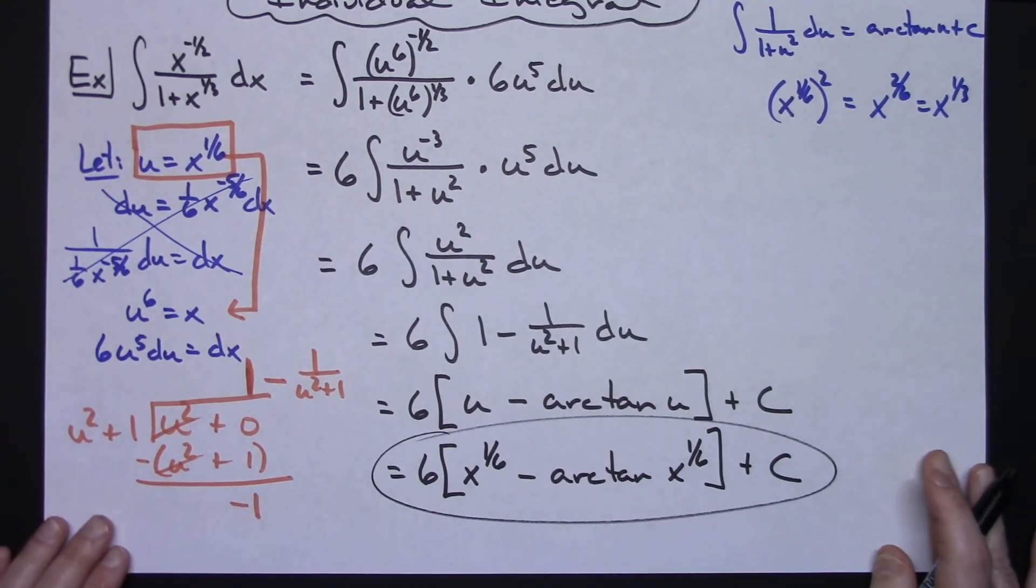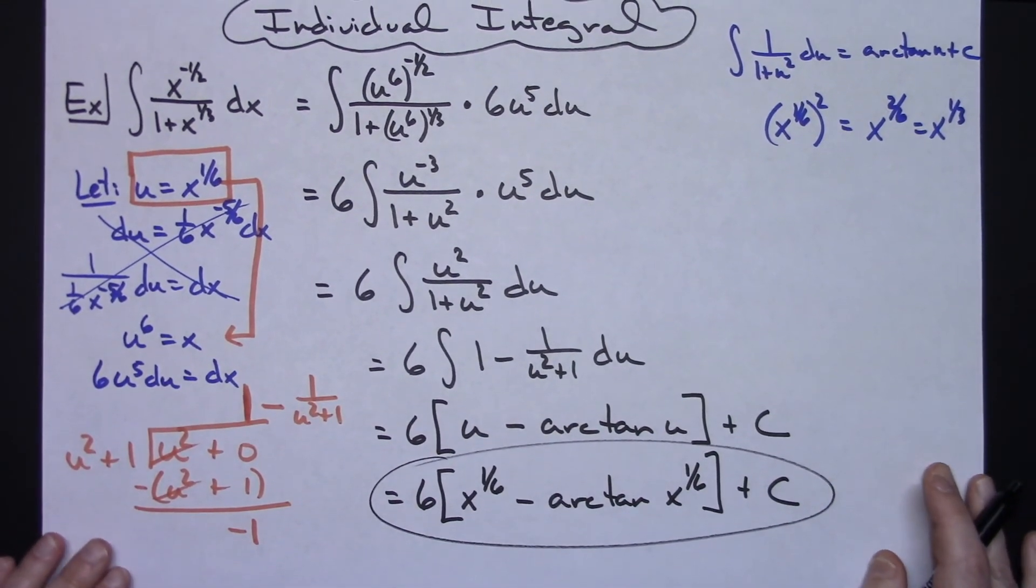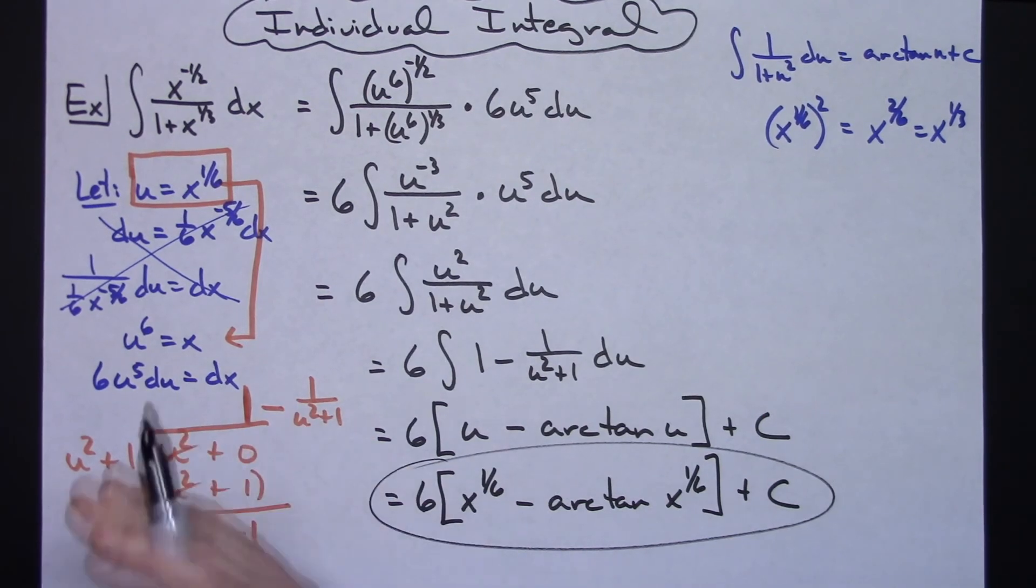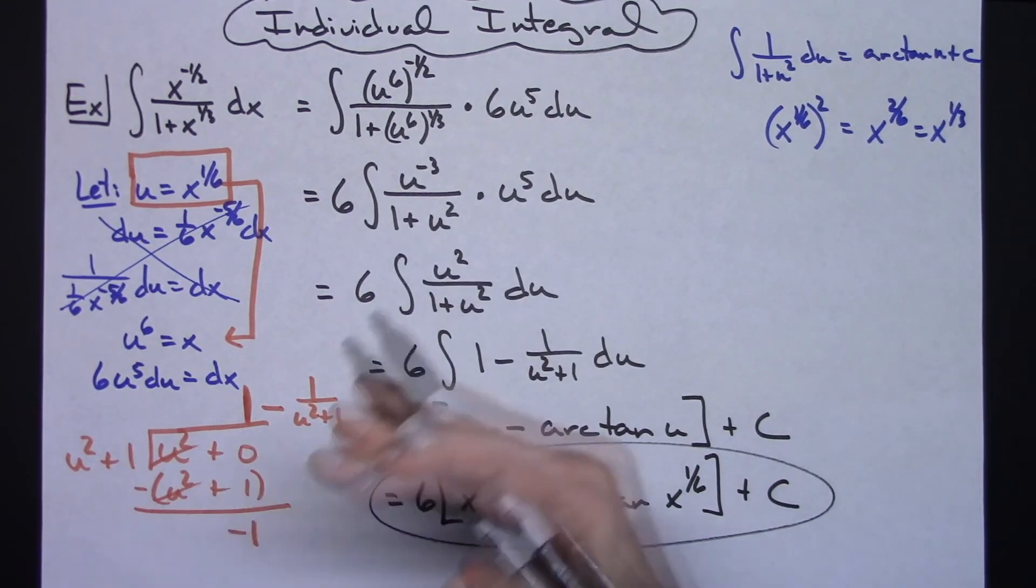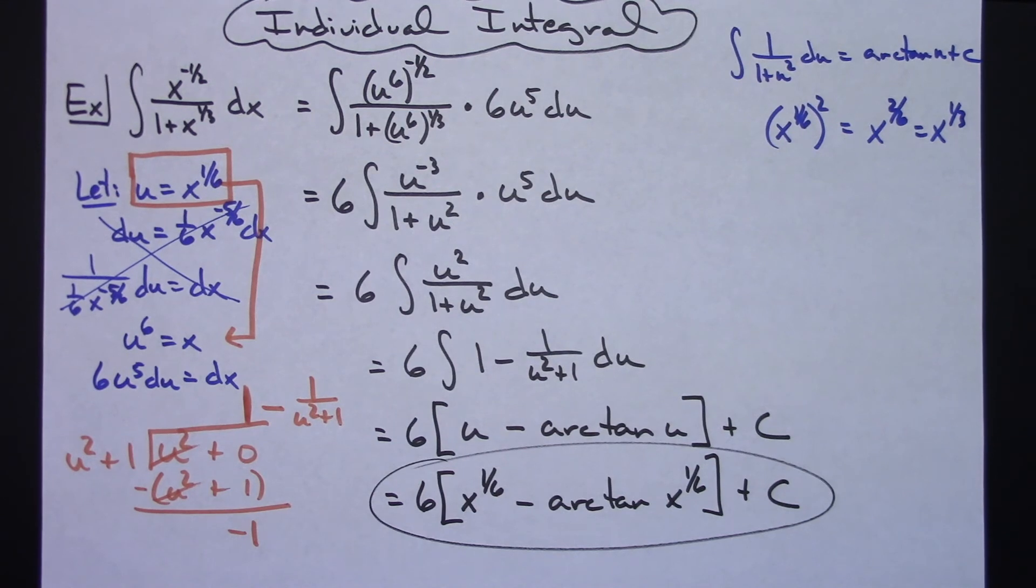So 6 times x to the 1/6 minus arctan x to the 1/6 and then plus c. So once getting started on this, not too bad. Just picking and choosing what you're going to let that u be and then how you're going to actually replace it into that integral to make it a whole lot easier to manipulate.